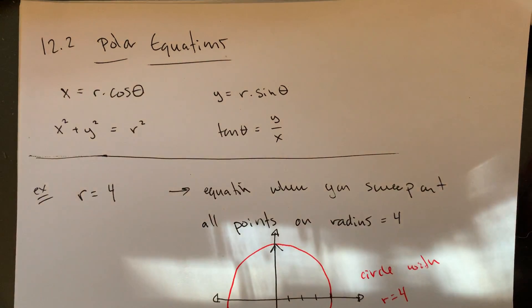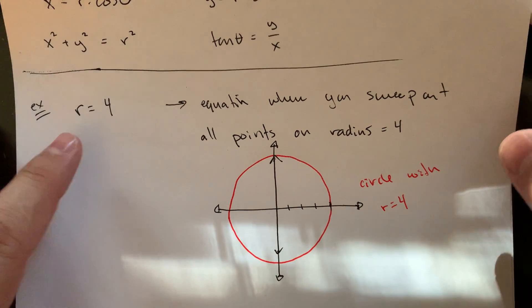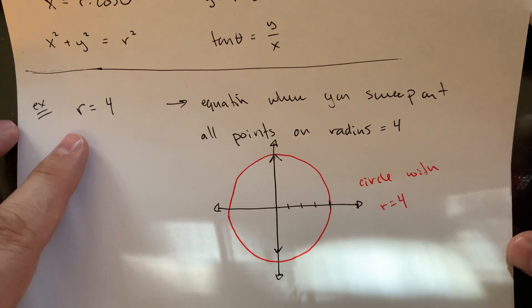So the first thing I want to look at is a graph of a circle. I'm kind of taking some of the mystery out of this, but if I have a polar equation, some of our simplest equations, radius equals four, r equals four.